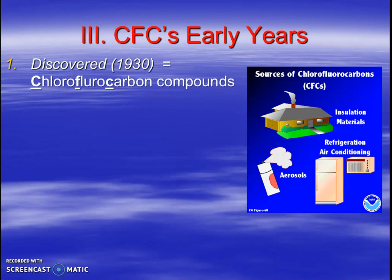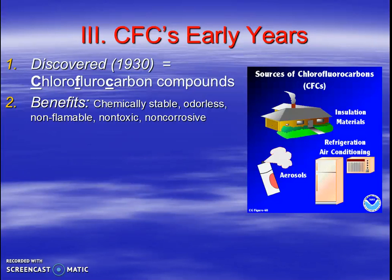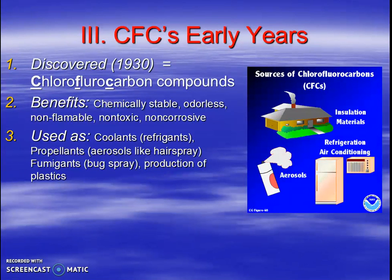But there's this chemical called chlorofluorocarbons — CFCs — that were discovered in the 1930s. There are a lot of benefits to these compounds: they're stable, they're odorless, they're non-flammable, they're non-toxic, and they're non-corrosive. They were used for spraying and cooling things — in refrigerators as refrigerants, as propellants, aerosol hairsprays, fumigants like bug sprays, and production of plastic. So they were used a lot as industrialization and urbanization kicked into high gear in the 40s and 50s, spraying all over the place into the air.